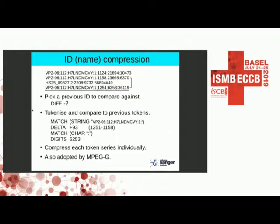Read name compression is also very important. It turns out gzip and bzip2 are really bad at compressing read names. The solution is tokenization: split read names on separators like colons, compare tokens between consecutive read names, and classify each token as a match, a new string, a numeric value, or a numeric delta. Serializing these token streams and compressing them together yields incredible compression — often half or a third the size of gzip — matching neural network-based compressors that take orders of magnitude longer. This approach has also been adopted by MPEG-G.